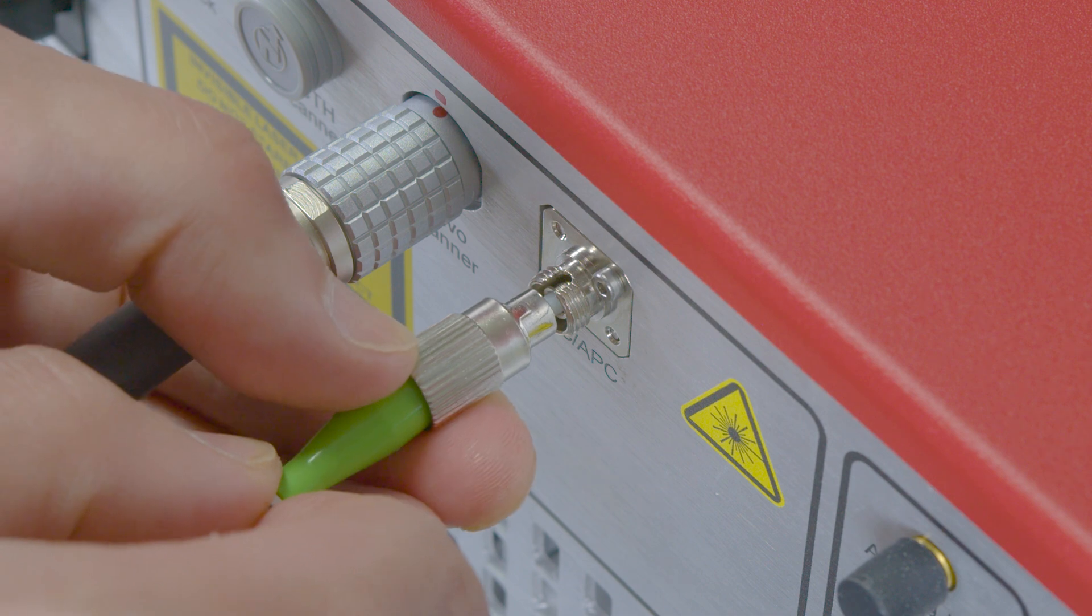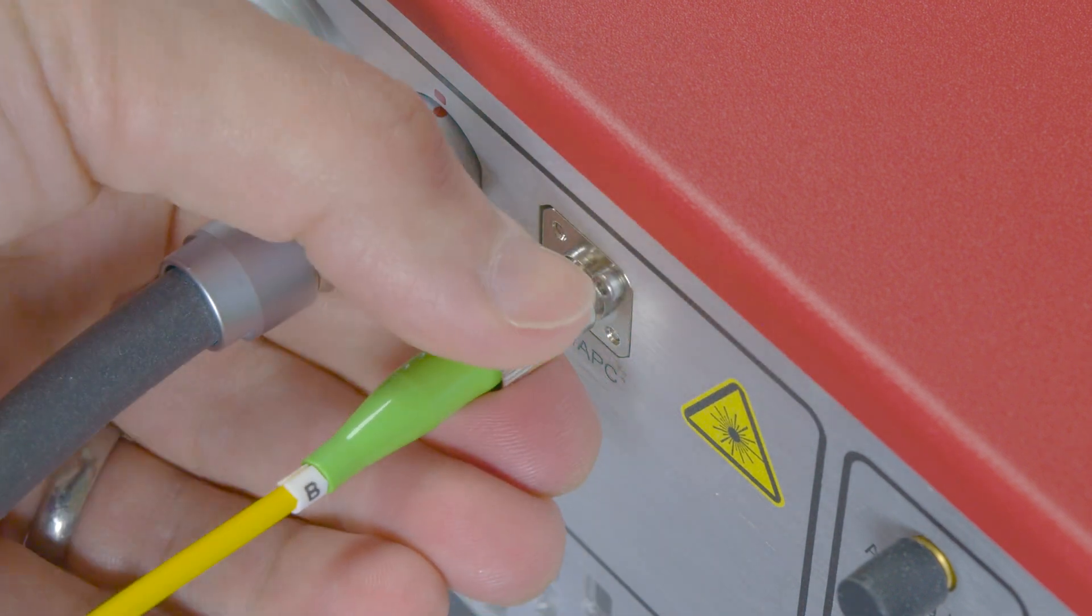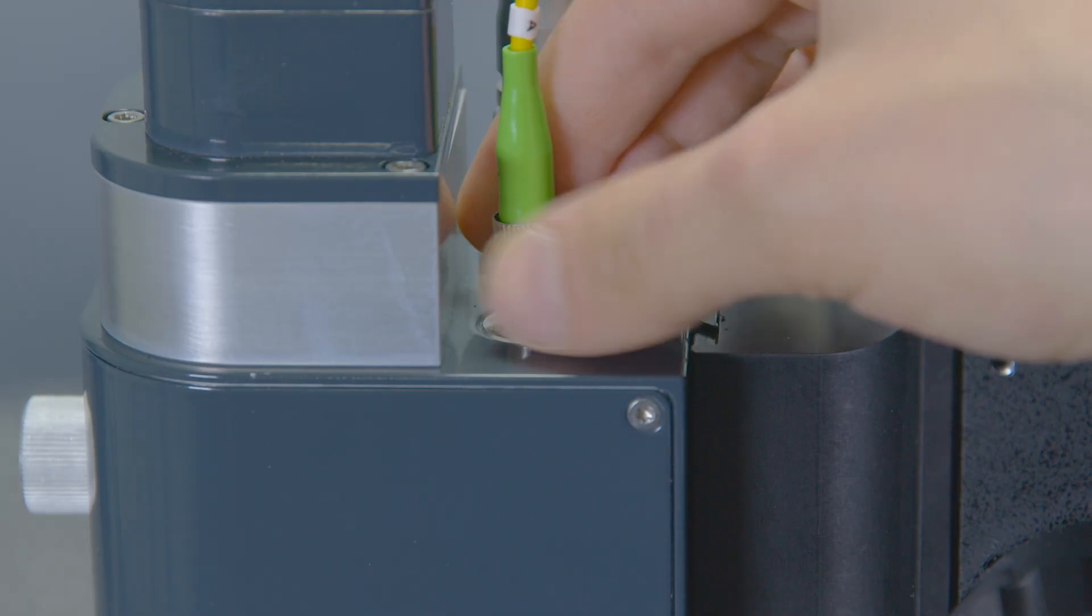Attach the fiber patch cable to the back of the OCT base unit and connect the other end to the scanning unit.